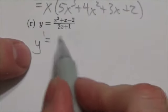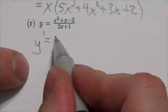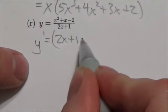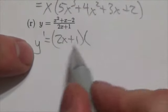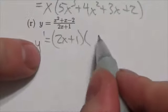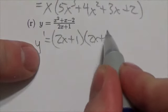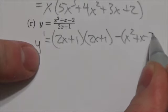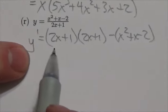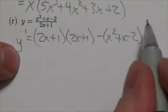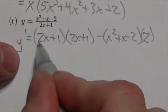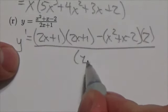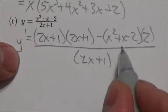Okay, so now we're going to take the derivative of the numerator, so 2x plus 1 times, and you got to love what you're seeing there, times 2x plus 1 minus x squared plus x minus 2 times the derivative of the denominator, which in this case is simply going to be 2, all over 2x plus 1 squared.